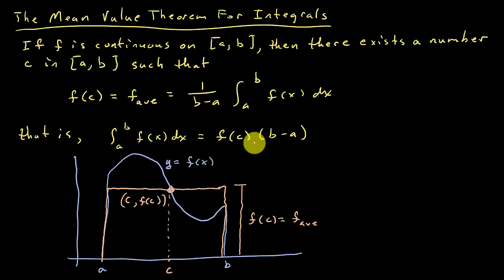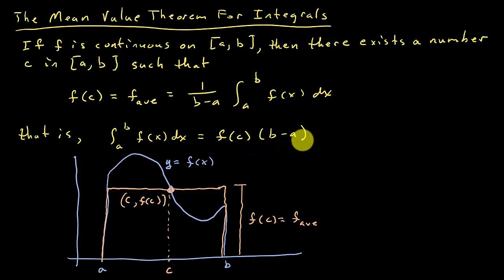Now let's look at the Mean Value Theorem for integrals. It says if f is continuous on [a, b], then there exists a number c in this interval such that f of c equals the average value of the function — that is, the integral of f of x dx from a to b equals f of c times b minus a.